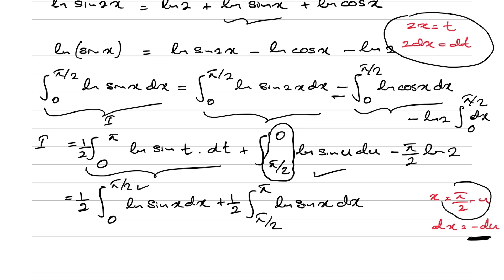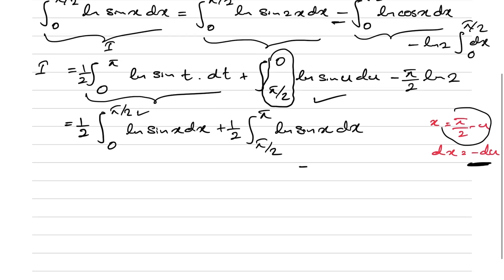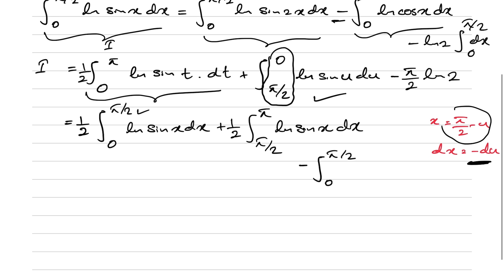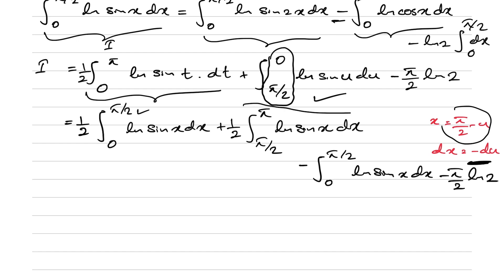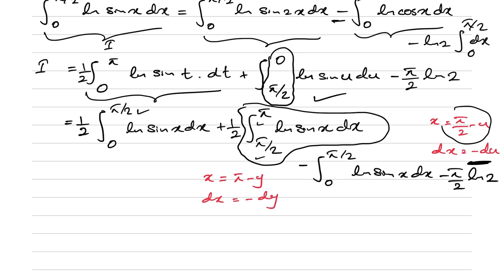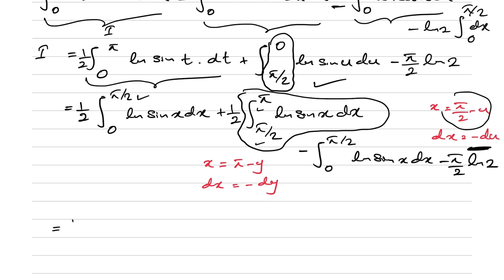We interchange the upper and lower limits of the second piece, multiplying by minus sign. For the integral from π/2 to π, I take the substitution x = π minus y, so dx = minus dy. Plugging in: we have one half times the integral from 0 to π/2 of ln(sin x) dx, and one half times the new substituted integral.